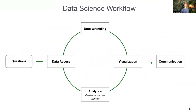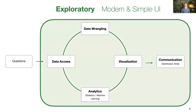When we talk about data science, we think in this sort of workflow terms: you have the business questions you want to answer, so you want to access the data, you want to transform and clean data so that you can visualize or analyze. Once you find useful insights, then you want to communicate with others because most of the time you work with a team or with stakeholders. Exploratory provides a modern and simple UI to do these five pillars of data science: data access, data wrangling, visualization, analytics, and communication.